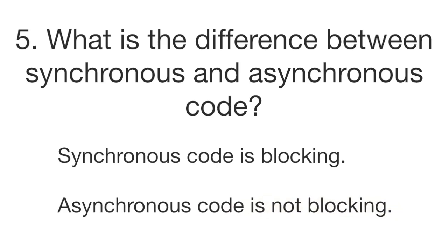Question number five: what is the difference between synchronous and asynchronous code? Synchronous code is blocking — it must complete before anything else can happen. Asynchronous code is not blocking, which means things can move on while we wait for something to finish. Asynchronous JavaScript utilizes callbacks to do this and is faster, allowing for a better user experience.